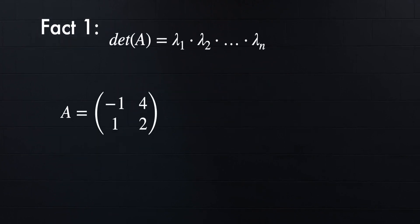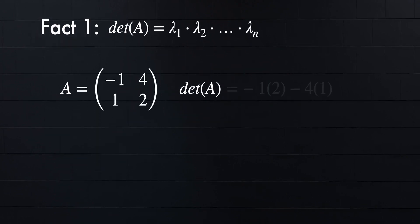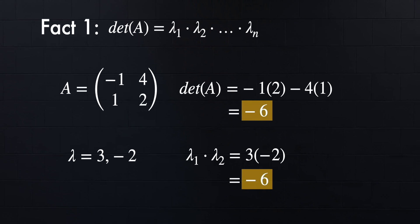For example, if you look at matrix A, its determinant is -1 times 2 minus 4 times 1, which is -6. And its eigenvalues are 3 and -2, which multiplied also gives us -6.